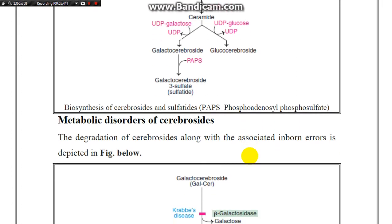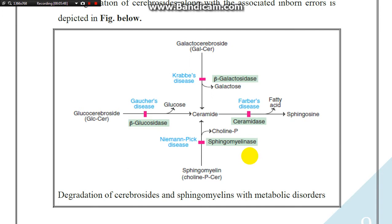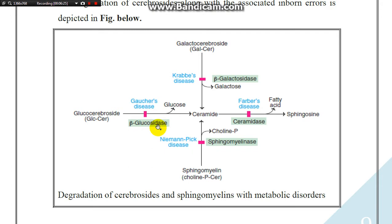In the metabolic disorders of cerebrosides, ceramide is the central compound. Hydrolysis of galactocerebroside gives ceramide via beta-galactosidase. Any defect or disorder in this enzyme leads to accumulation of galactocerebroside, and this disease is called Krabbe disease. Glucocerebroside is converted to ceramide by the beta-glucosidase enzyme, removing glucose. Any defect in beta-glucosidase leads to accumulation of glucocerebroside.